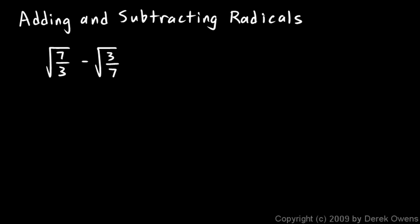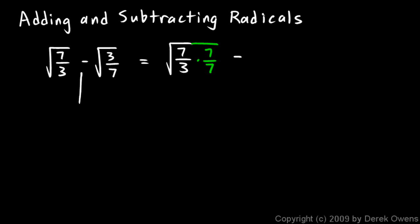I'll show you how we can deal with this. I'm going to deal with the different denominators first. I'm going to rewrite the problem like this: I'll take this square root of 7 thirds and extend the radical and multiply by 7 over 7. I'm getting that 7 from the other term. Then I have my minus sign, and I take the square root of 3 sevenths and extend the radical and multiply by 3 over 3.